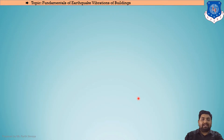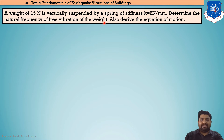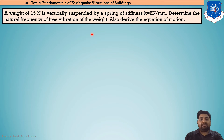Moving on, we will be discussing our first numerical. The question is: a weight of 15 Newton is vertically suspended by a spring of stiffness k equal to 2 Newton per mm. We are asked to determine the natural frequency of free vibration of the weight. Since there is no damping constant prescribed, this is a free undamped condition. In the GTA examination, you need to identify which of the four conditions applies.